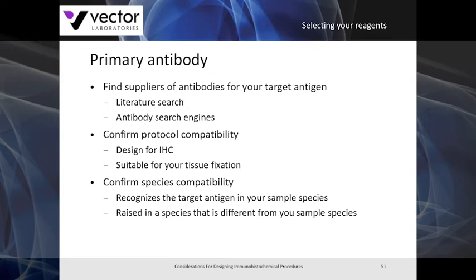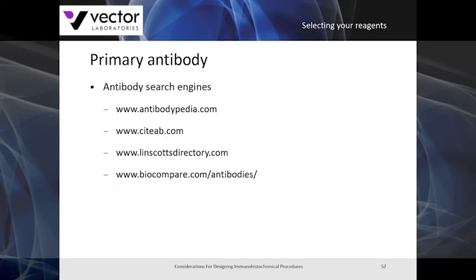You'll also want to confirm that your primary antibody is suitable for the fixation you plan to use for your specimen. Additional considerations include whether the species of your primary antibody is compatible with the species of your specimen, and whether the primary antibody recognizes the target antigen of your specific sample species. Here's a list of common antibody search engines you can use on the internet to narrow down your choices.